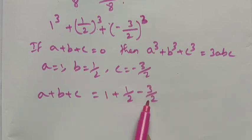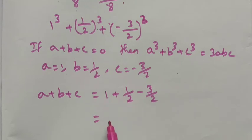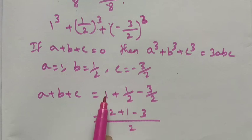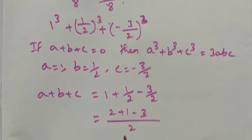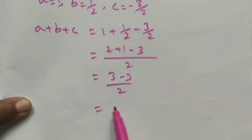Here only two terms have a denominator; the first term does not have the same denominator, so we take LCM. LCM is 2, so multiply by 2: 2 plus 1 minus 3, all divided by 2. That gives 3 minus 3 divided by 2, which is 0 divided by 2, equal to 0.